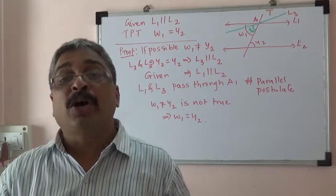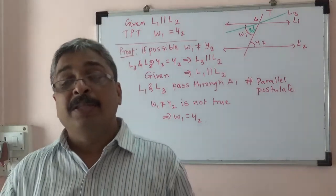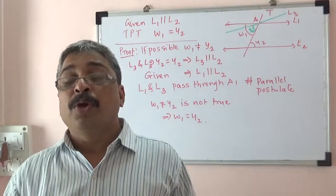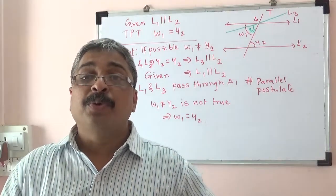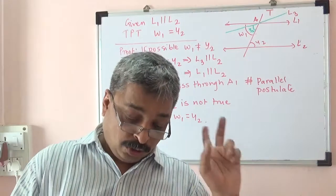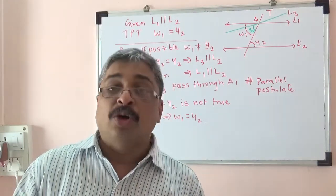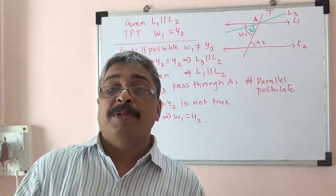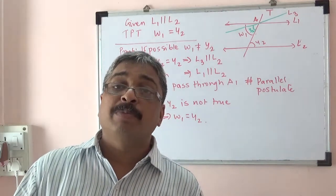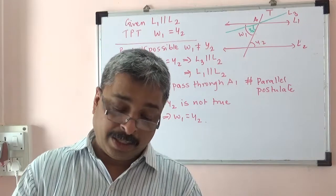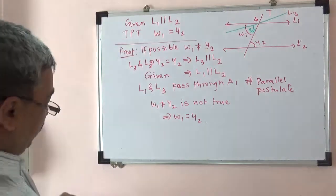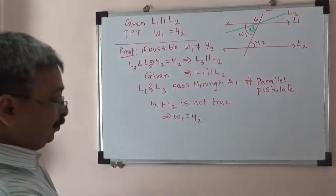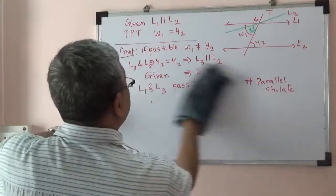Therefore, what we assumed — W1 not equal to Y2 — is not true. Hence L1 parallel to L2 implies W1 equals Y2. So if the two lines are parallel, alternate angles are equal. And if alternate angles are equal, all remaining seven statements follow. Therefore if L1 parallel L2, all remaining eight statements are true; and if all eight statements are true, L1 parallel L2. All nine statements are equivalent: if any one is true, the remaining eight are true; if any one is false, the remaining eight are false.